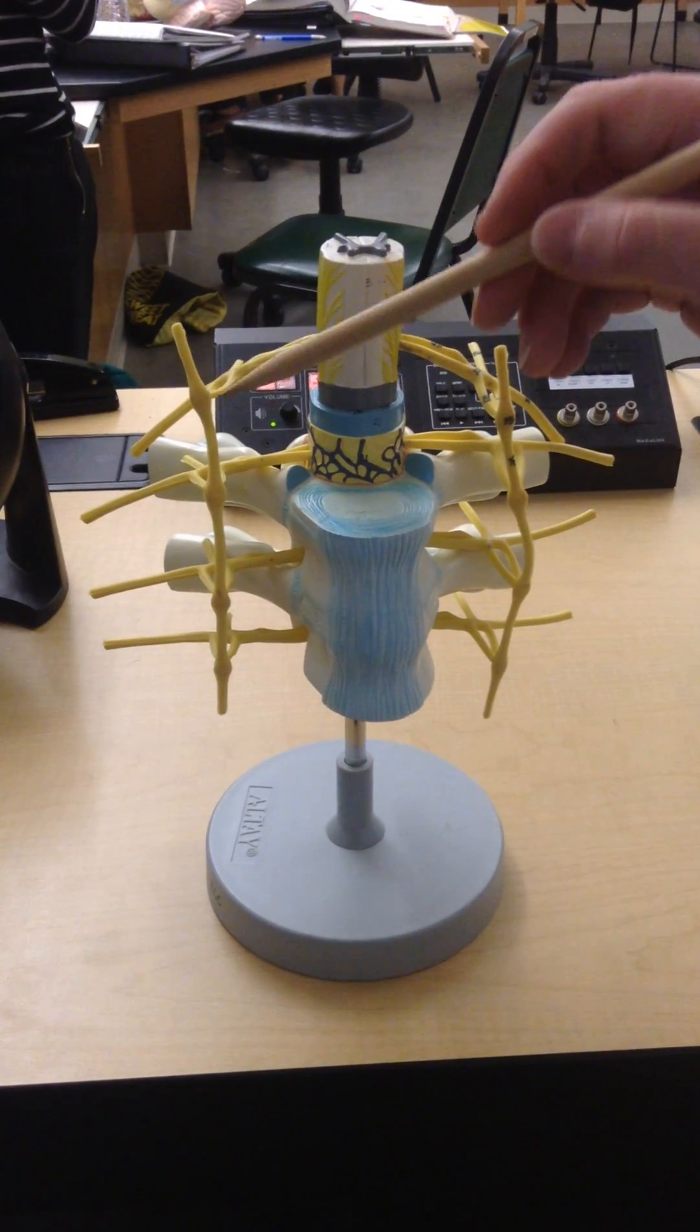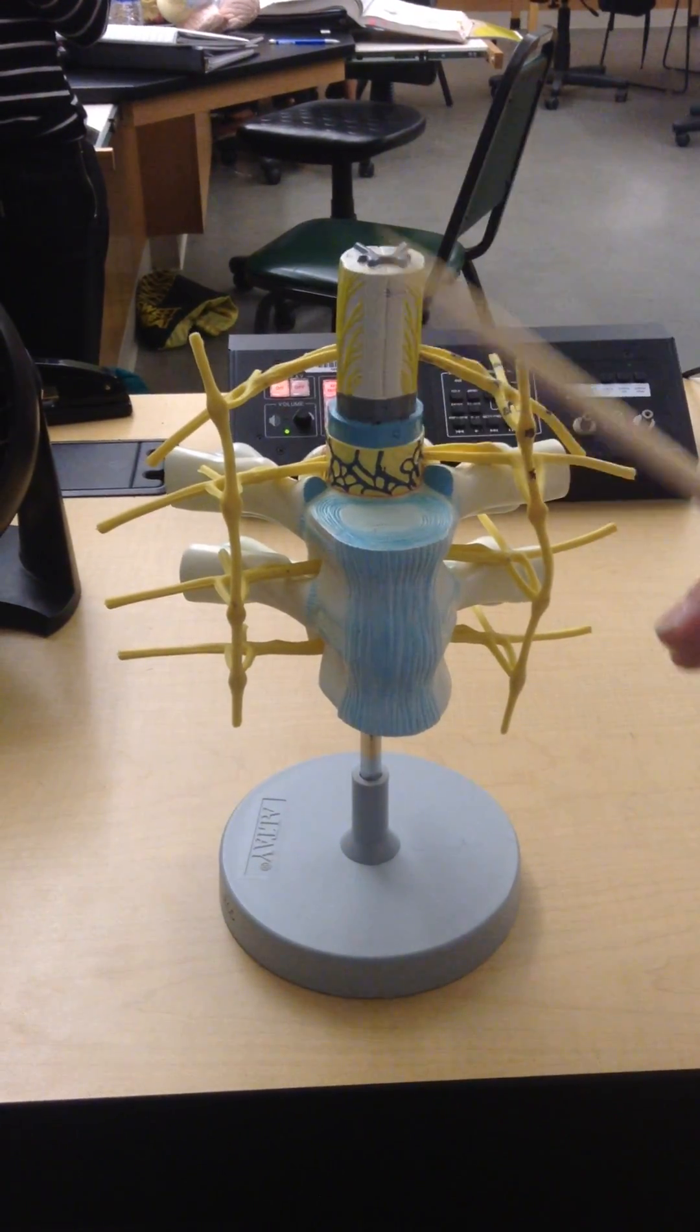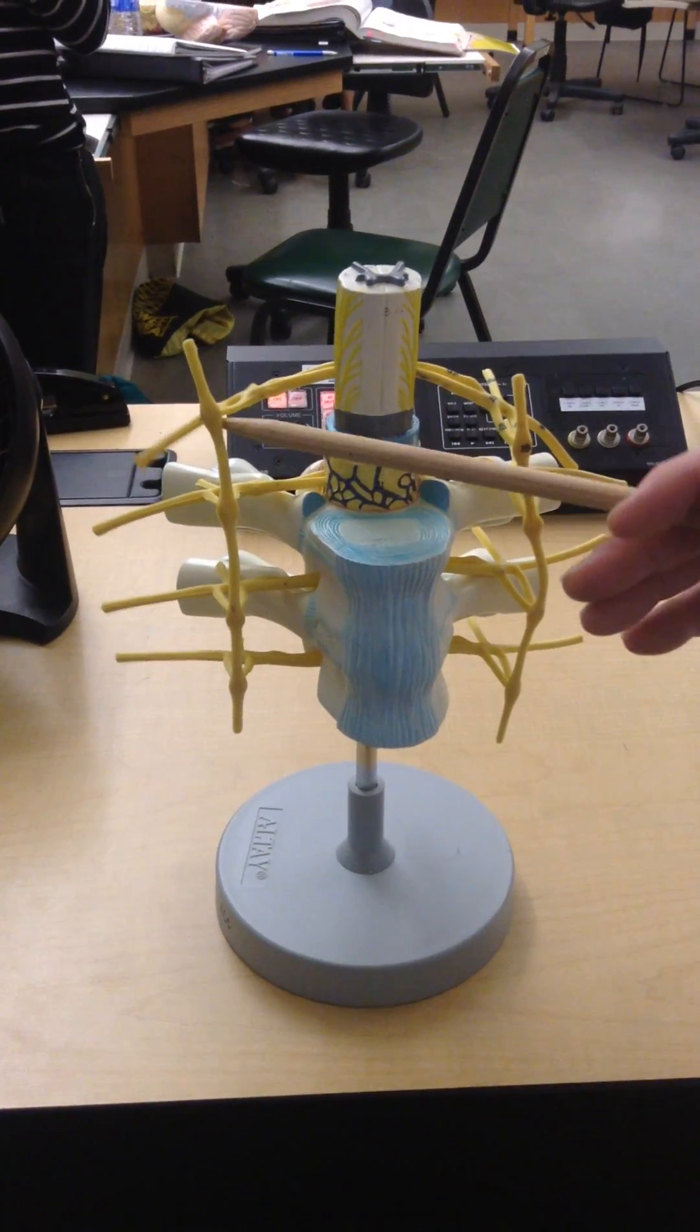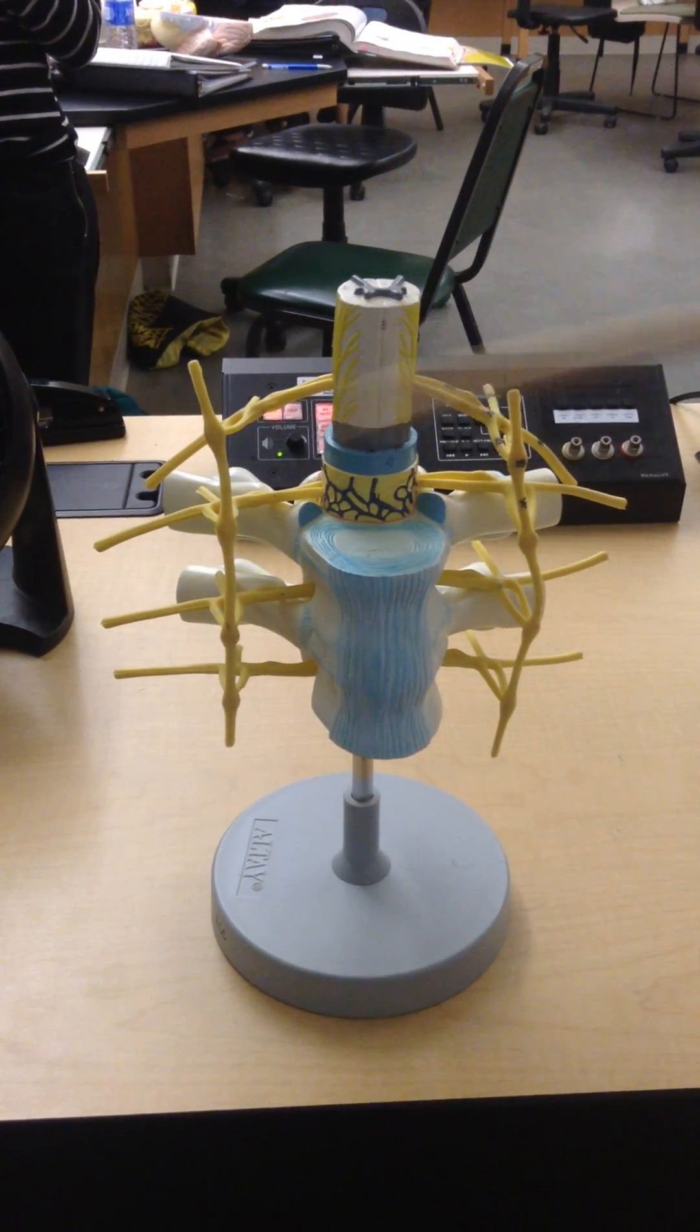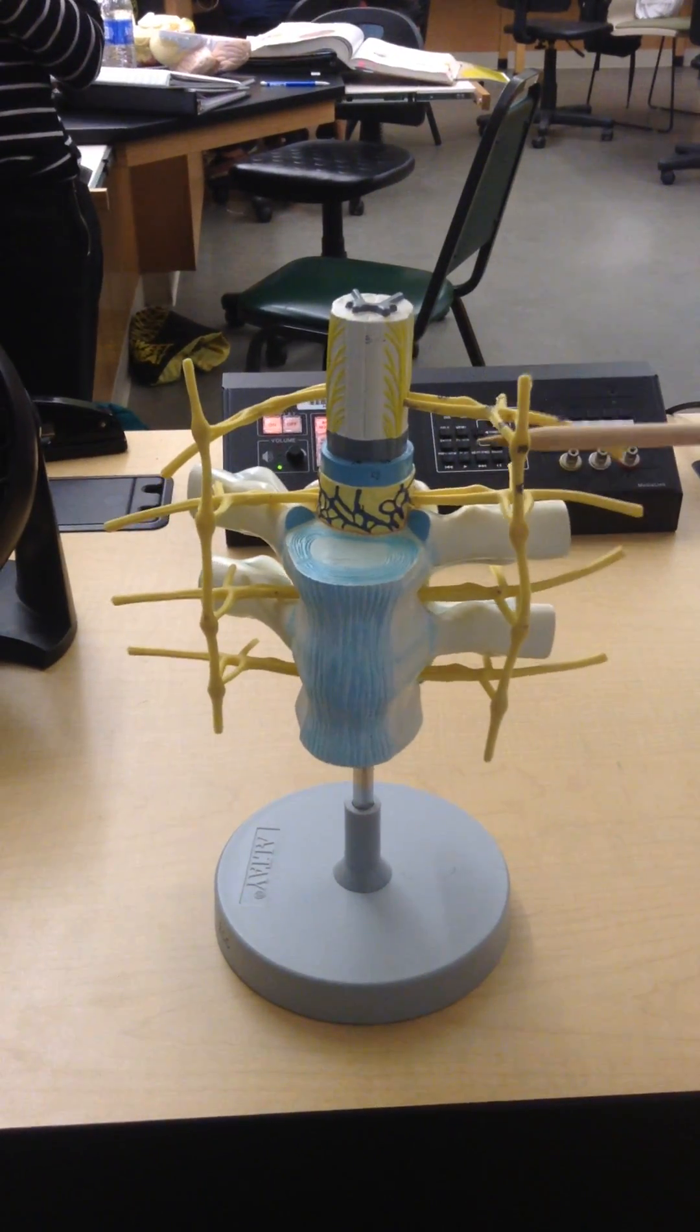just like the dorsal root ganglia, the cell bodies of the neurons that are entering or exiting the spinal cord. And in this case, there are four specific pathways associated with this overall structure of the sympathetic nervous system.